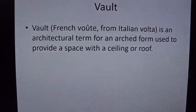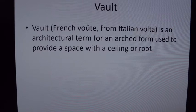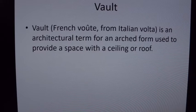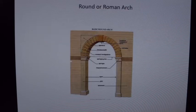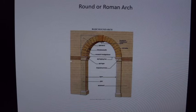Next we're going to talk about vaults. When we're talking about the vaulting system, it's everything used to provide interior space, including the ceiling and the roof. The vault that was finally successful in spanning great interior space — because the Greeks didn't figure it out, not in stone — would be the Romans. The round Roman arch conquered interior space in the West. They were great engineers. In addition to the round arch, the Romans also invented concrete.